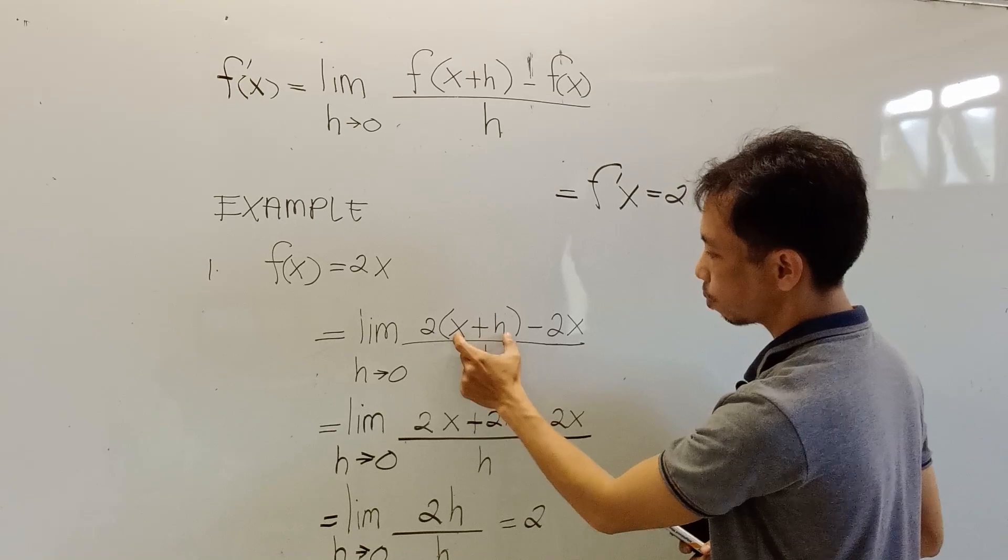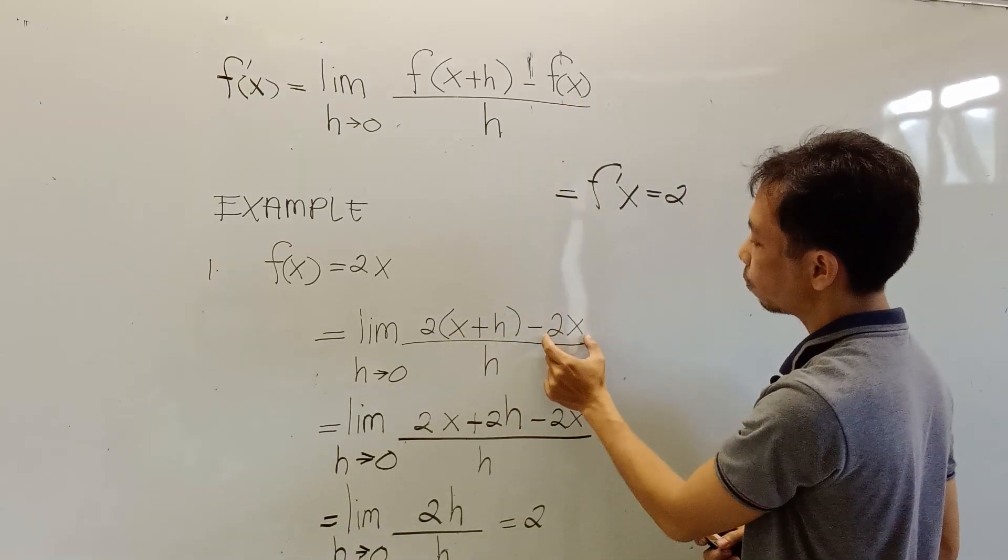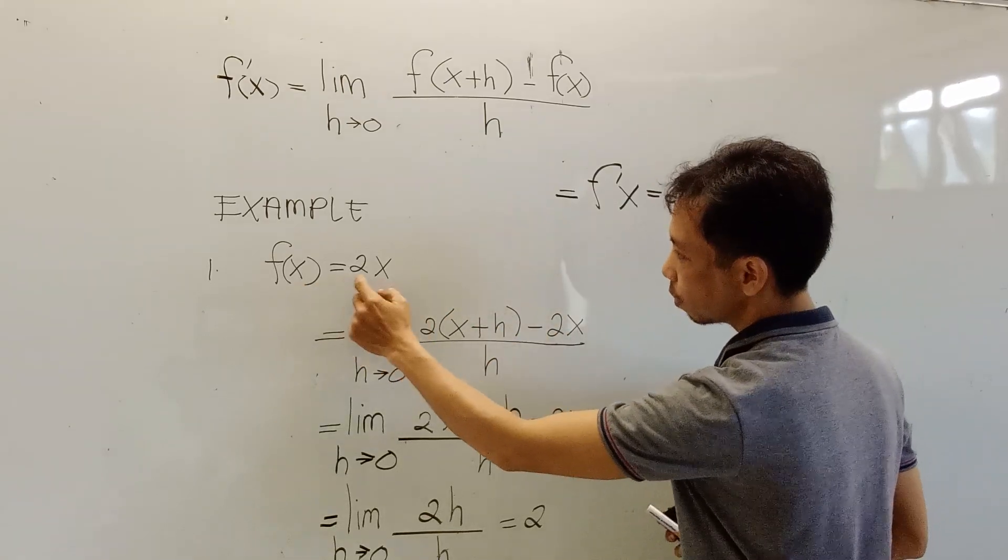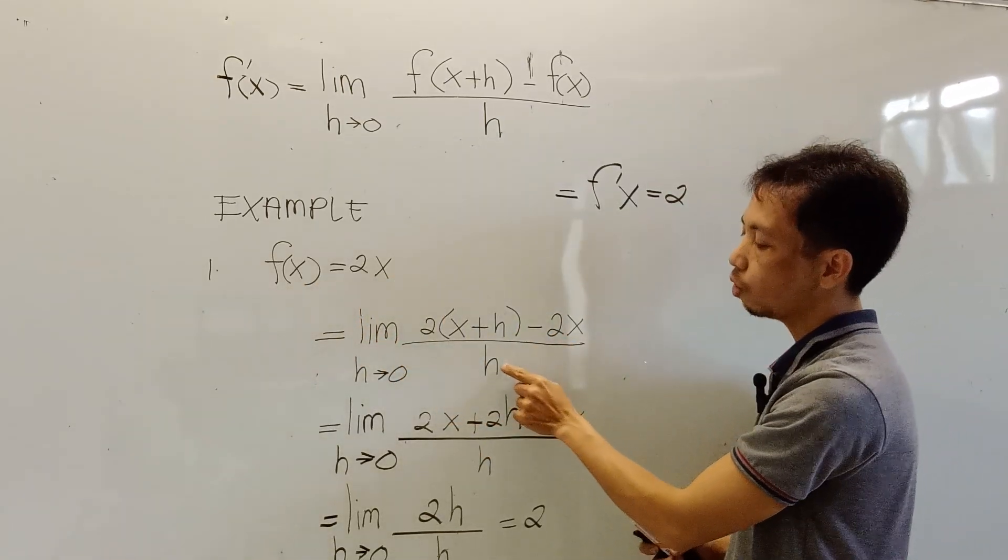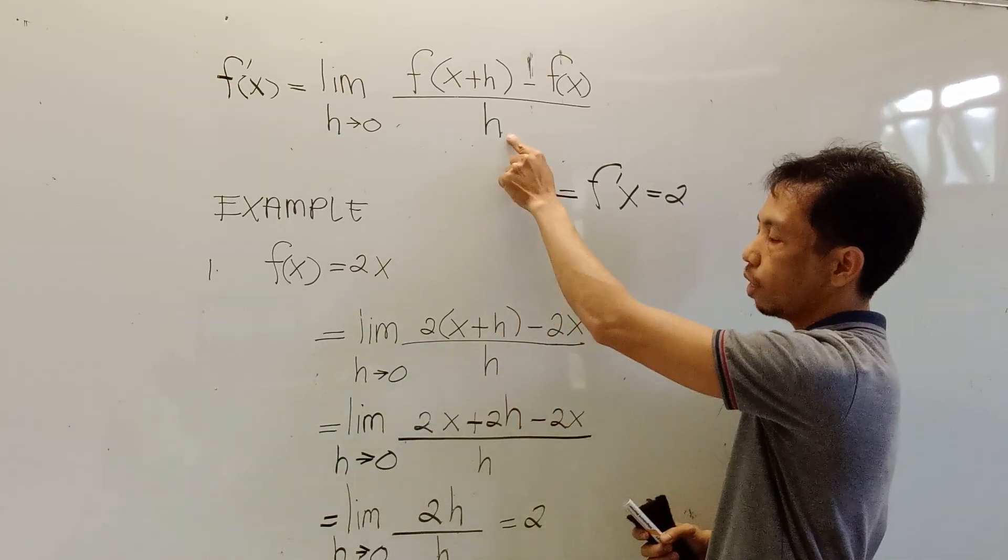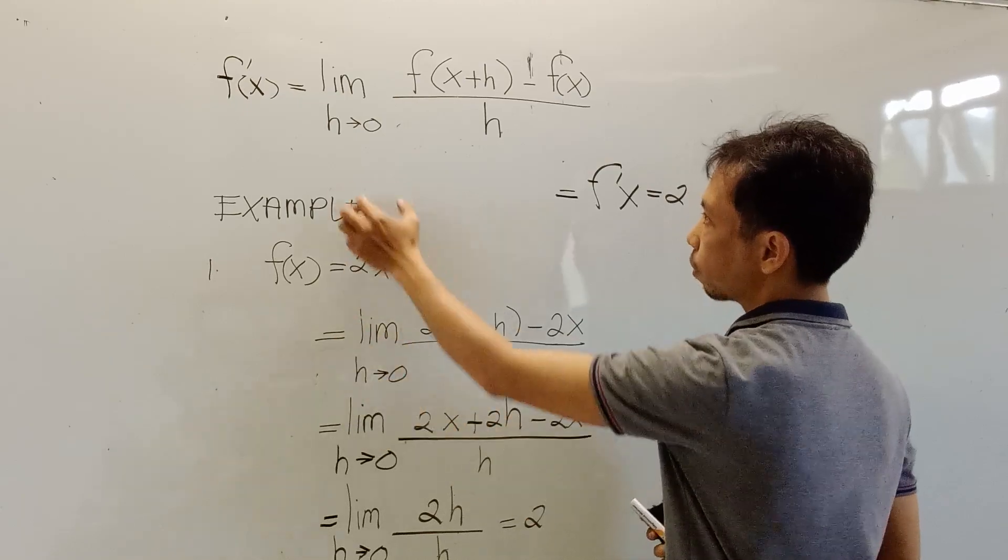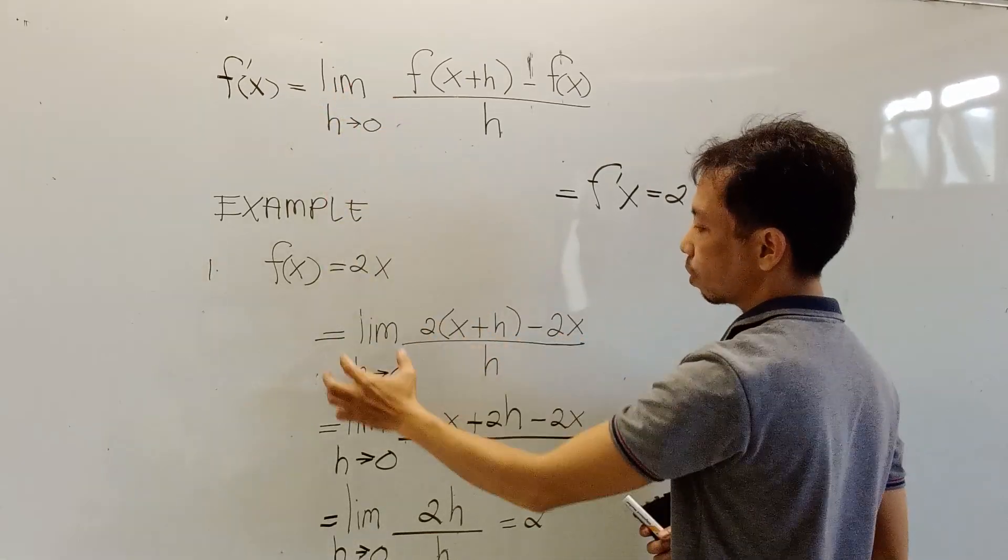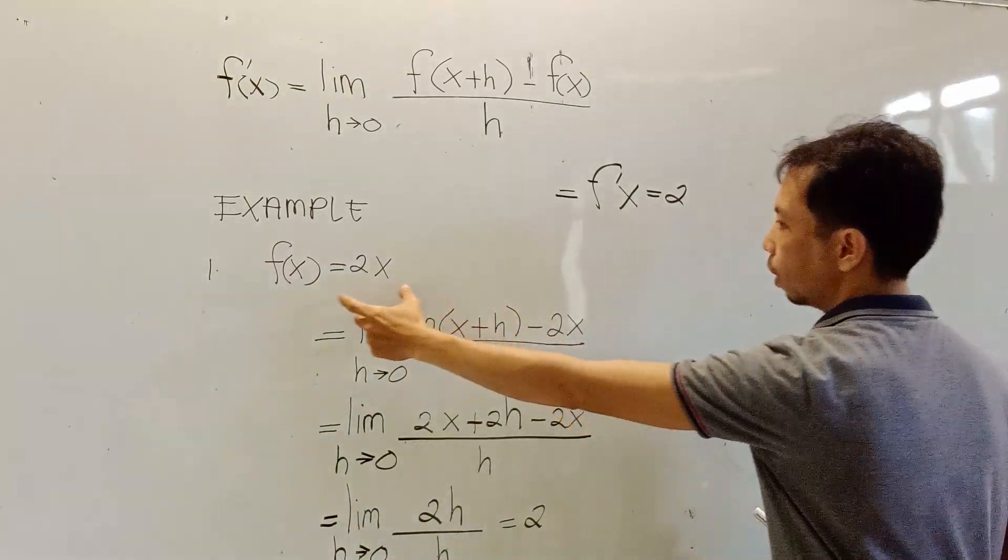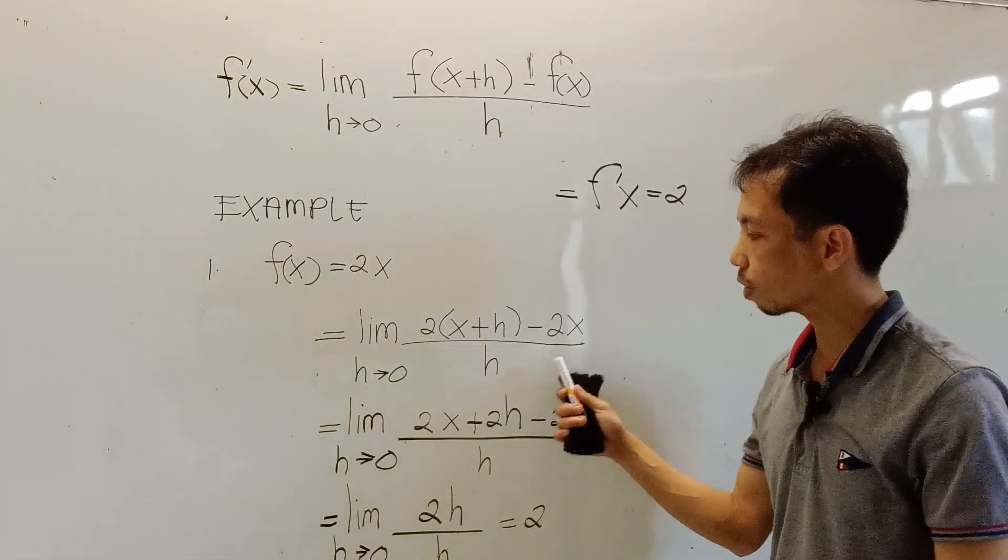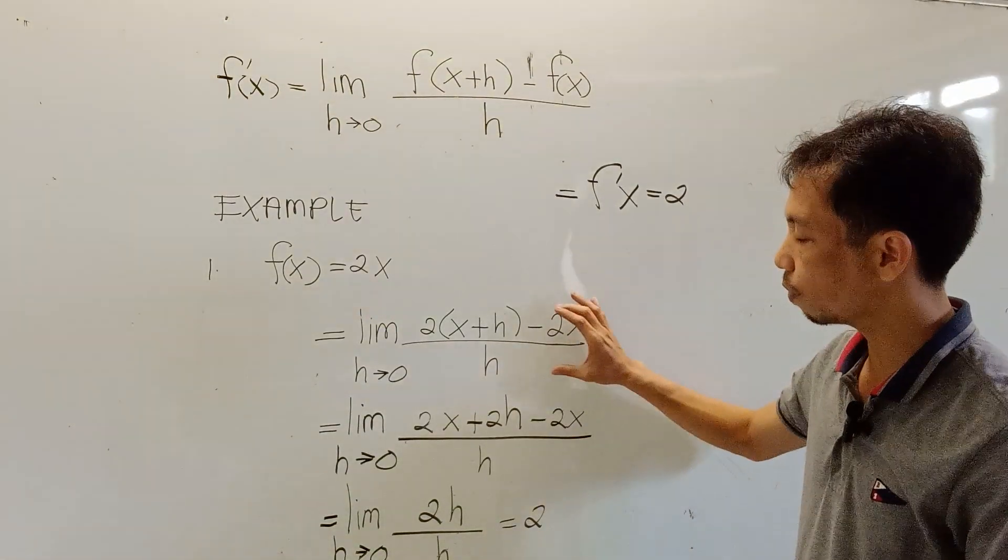Okay, so we replace the x with x plus h minus the function itself. The function itself is 2x. So we just copy the 2x all over h. We just copy the h from here. Then as h approaches 0, we just simply copy this part. Then replace the x variable with this one. Copy the function itself, 2x, copy the h. Okay, then simplify. We are going to simplify this one.